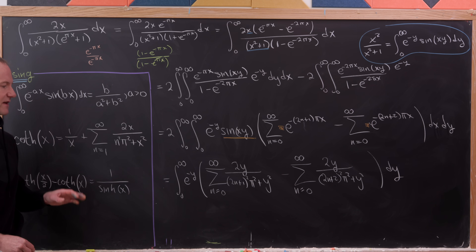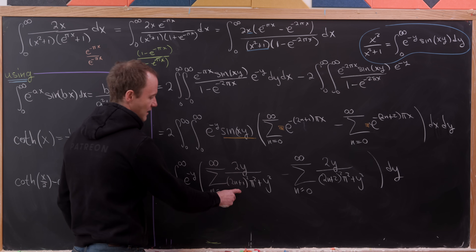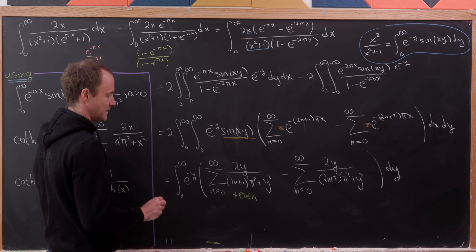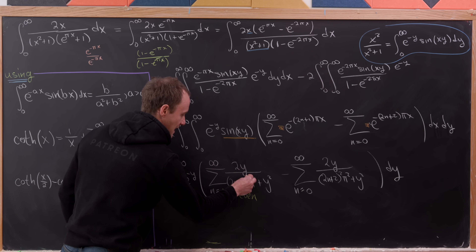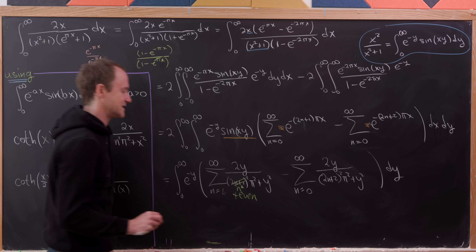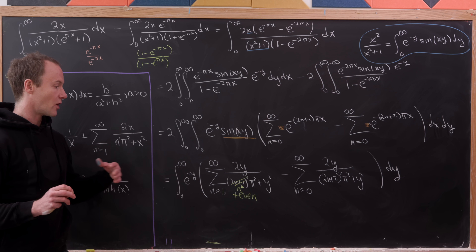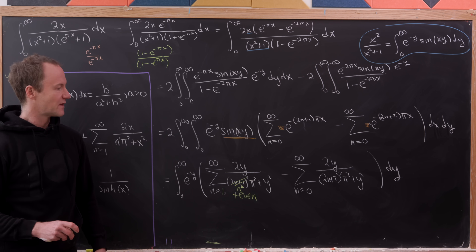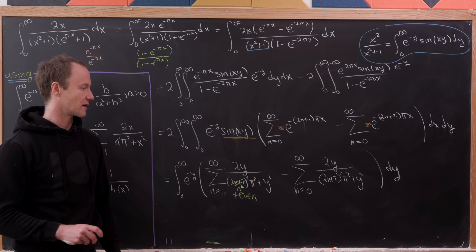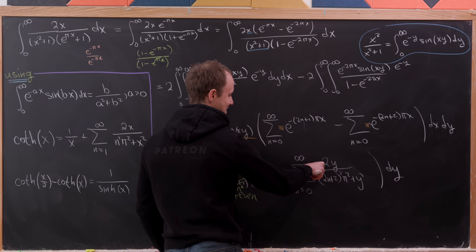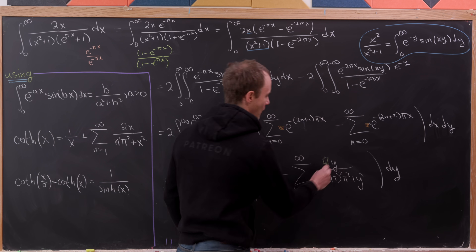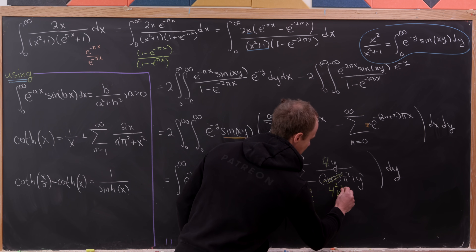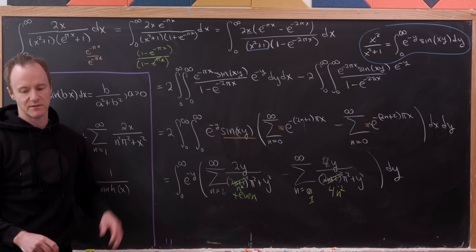Now we re-index. The first sum runs over odd values of n; adding even terms lets us rewrite it as a sum from n=1 to infinity of 2y/(n²π² + y²). Subtracting those even terms from the second sum changes the factor from 2 to 4, and re-indexing gives a sum from n=1 to infinity of 2y/(4n²π² + y²) — equivalently 2·(y/2)/((nπ)² + (y/2)²).